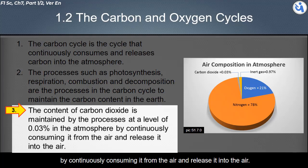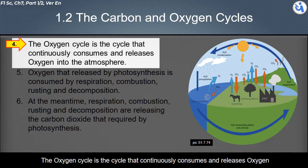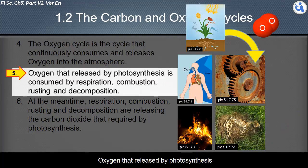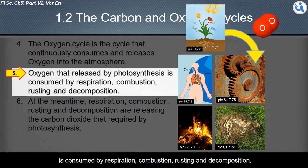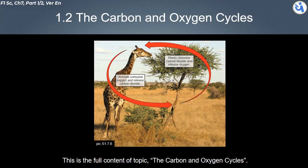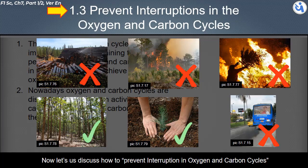The oxygen cycle continuously consumes and releases oxygen into the atmosphere. Oxygen released by photosynthesis is consumed by respiration, combustion, rusting, and decomposition. At the same time, respiration, combustion, rusting, and decomposition release the carbon dioxide required by photosynthesis. This completes the topic of carbon and oxygen cycles. Now let's discuss how to prevent interruption in these cycles.